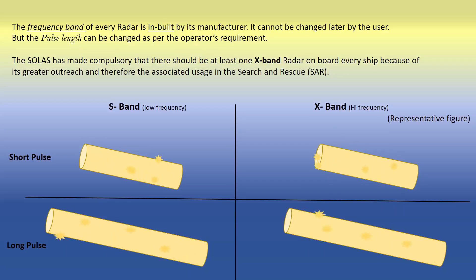The SOLAS has made compulsory that there should be at least one X-band radar on board every ship because of its greater outreach and therefore the associated usage in the search and rescue.